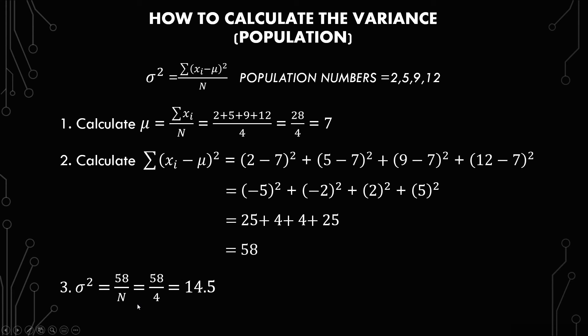And if you want the standard deviation for that you just take the square root of 14.5. This is the process and how you get the variance and ultimately also how you get the standard deviation.